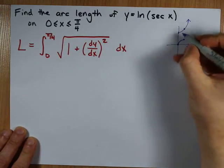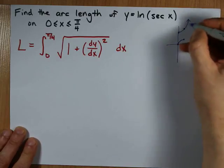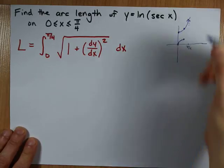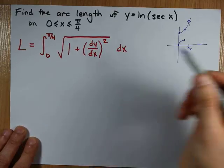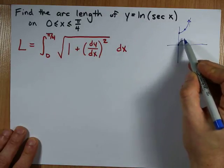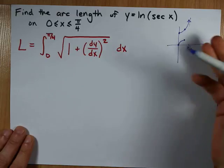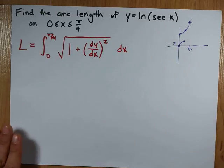y equals secant x starts at and goes up from there, has a vertical asymptote of pi over 2. By the time you get to pi over 4, you're at root 2. And so the ln of these values, the ln of 1 gives 0, the ln of root 2 gives some number, I don't know what it is. But we're looking for the length of that curve there.